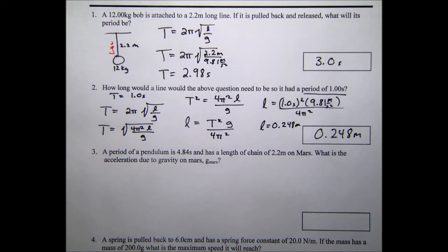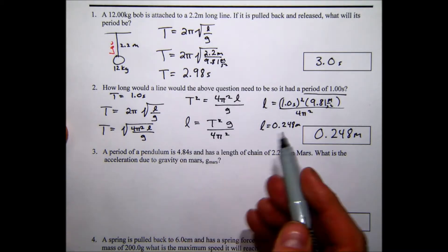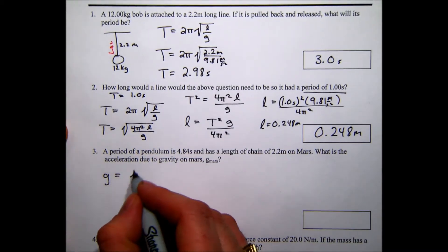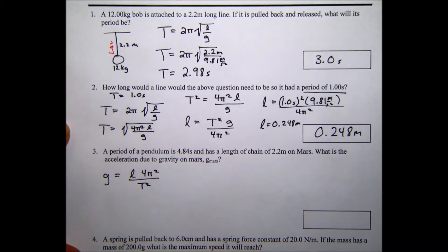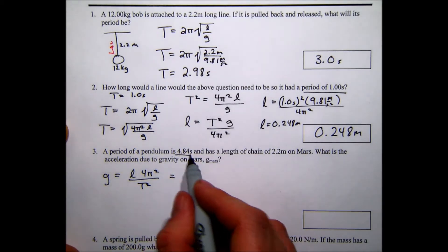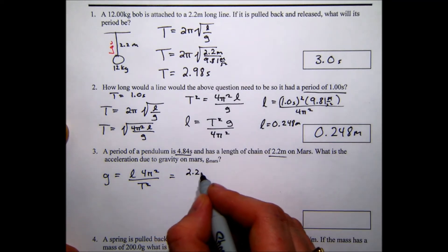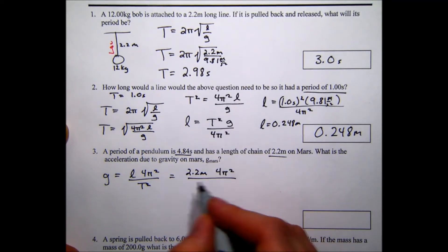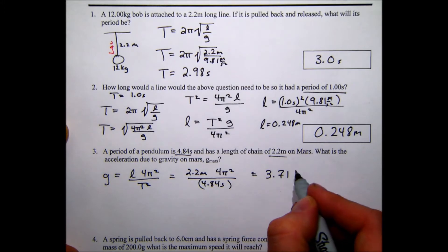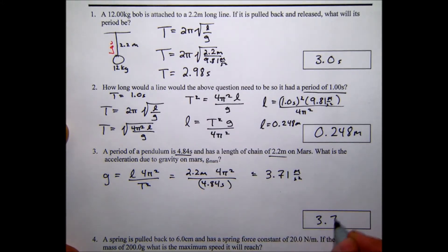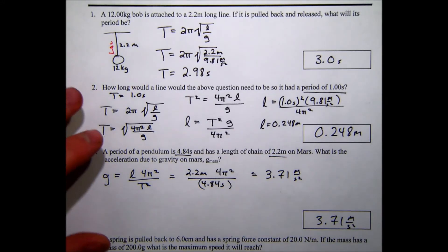A pendulum on Mars has a period of 4.84 seconds and a chain length of 2.2 meters. Using the rearranged formula g = L × 4π² / T², we plug in 2.2 meters and 4.84 seconds to get g ≈ 3.71 m/s², which matches the known acceleration due to gravity on Mars.